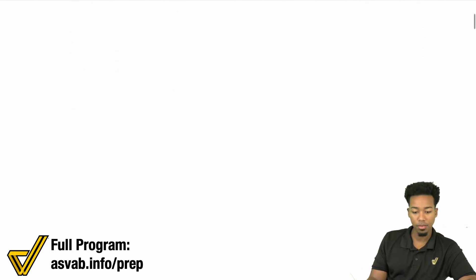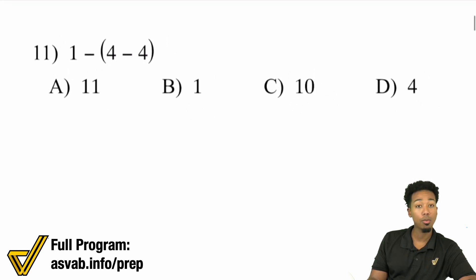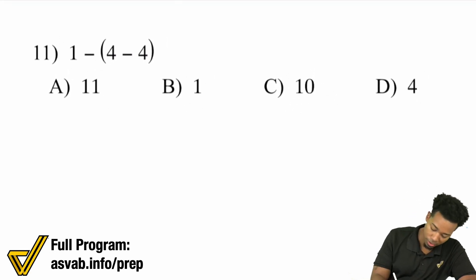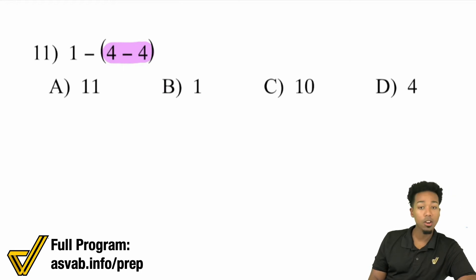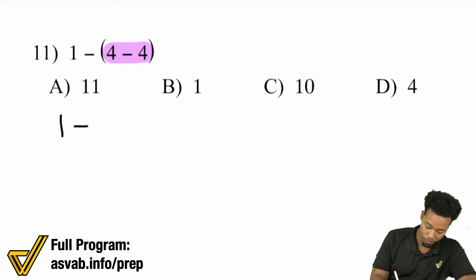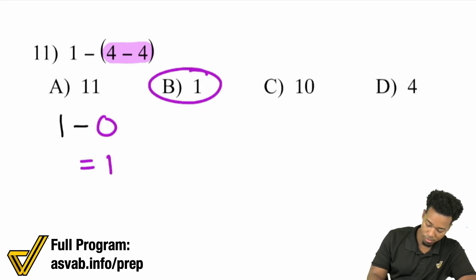Number 11: We have 1 minus (4 minus 4). Take care of parentheses first. 4 minus 4 is going to be 0. So we have 1 minus 0, which is just going to be 1. B.